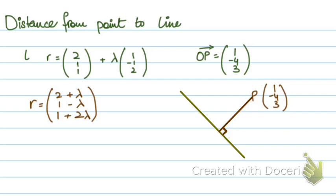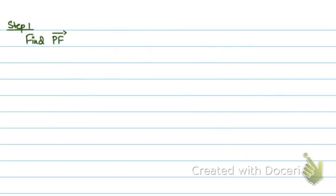Now, the intersection point — basically point F — is the point that creates a 90-degree angle on the line. We'll call this the foot of the perpendicular on the line, because at this point, the line passing through P creates a 90-degree angle.